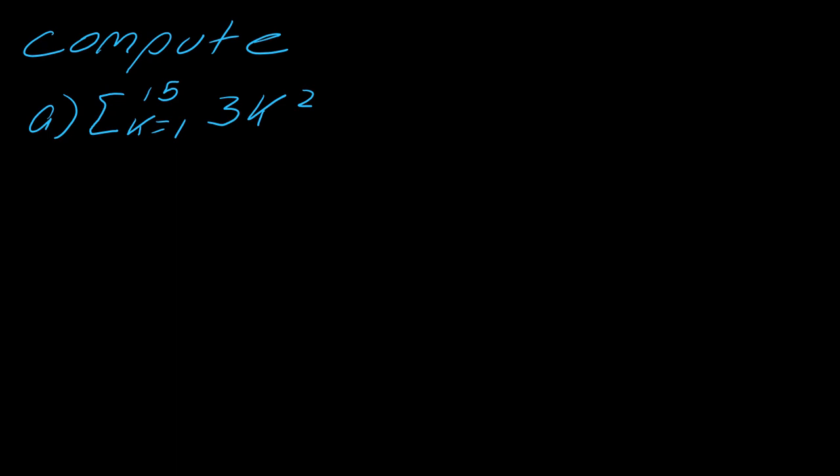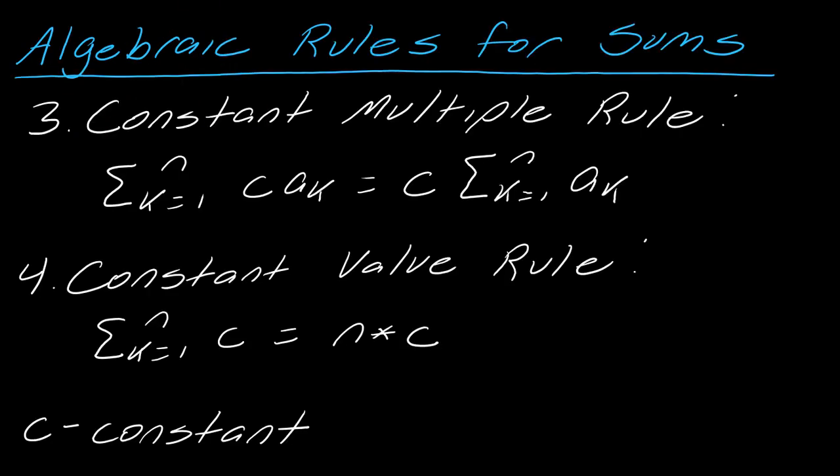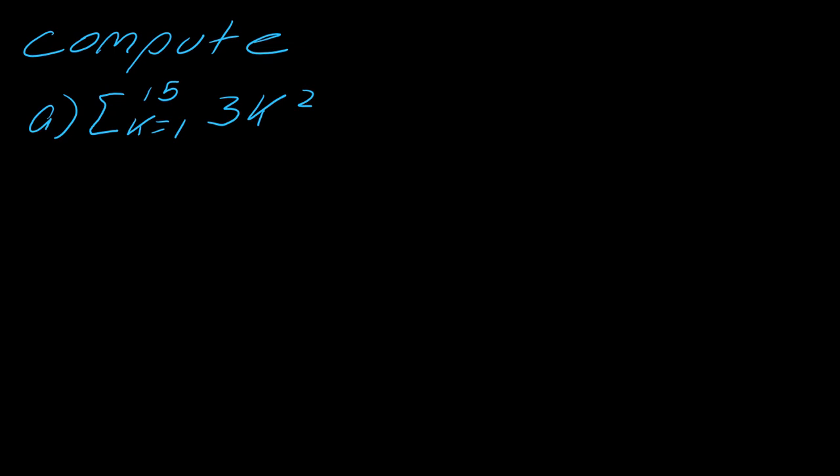So here's the first example I have for us on kind of using some of these formulas. So looking at this we can use one of the algebraic rules, we can use the constant multiple rule which says if I have a constant times some formula I can just pull that constant out like here. So that's the first thing that I want to do is take out the constant and now I can just focus on this k squared.